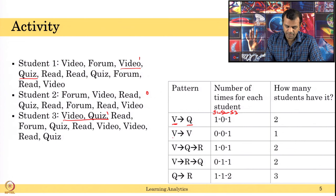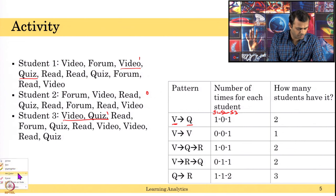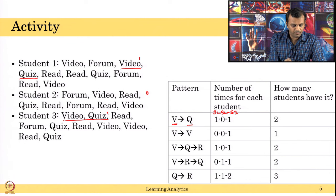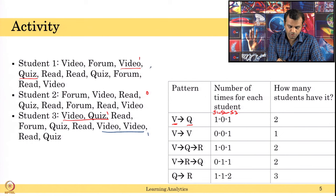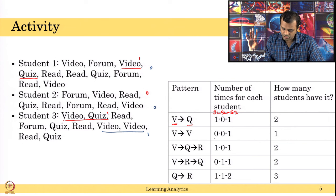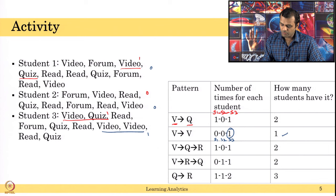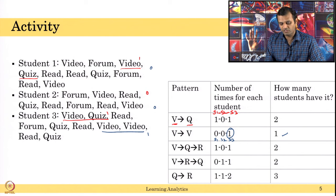Let us look at the second pattern: video followed by video. Video followed by video did not occur for student 1, did not occur for student 2, but it occurred for student 3 — so 0, 0, 1. Out of 3 students, only one student had this particular pattern. The pattern can be not just a 2-action sequence — it can be 3 or 4 actions also, depending on how much complexity you want to use.